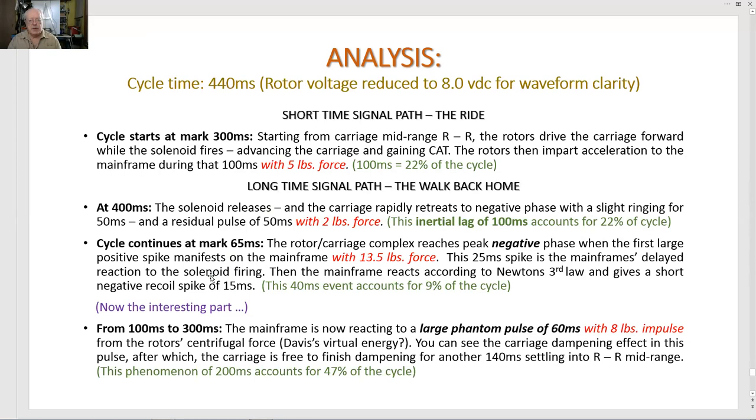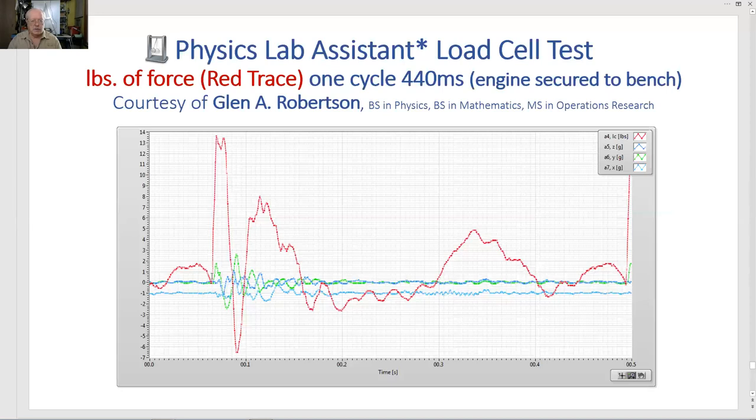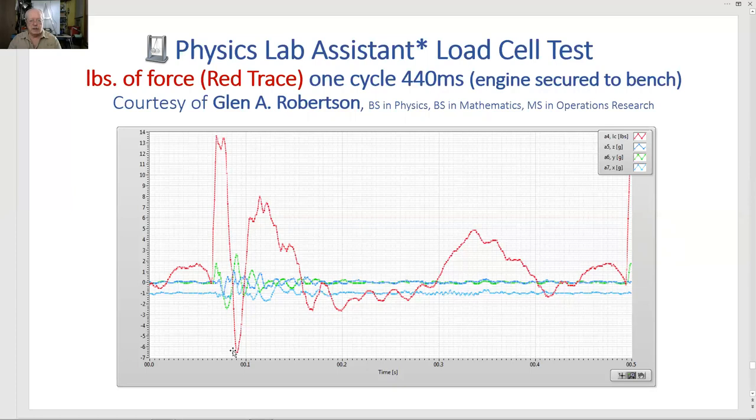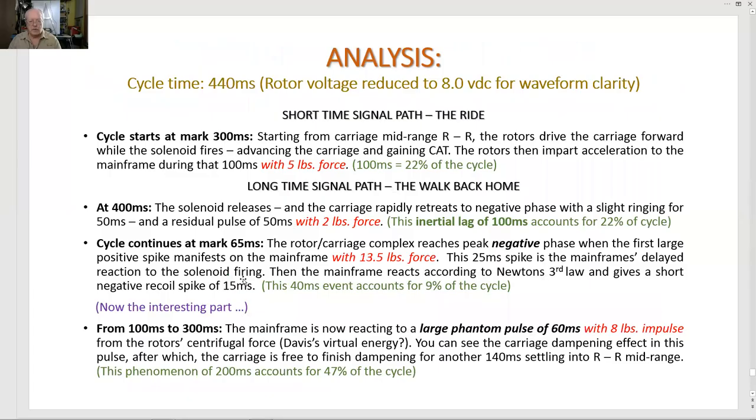The rotor carriage complex reaches peak negative phase when the first large positive spike manifests on the mainframe with 13.5 pounds of force. The carriage is already towards the back of the mainframe when this pulse occurs. This 25 millisecond spike is the mainframe's delayed reaction to the solenoid firing. Then the mainframe reacts according to Newton's third law and gives a short negative recoil spike of 15 milliseconds. Recoil spike. This 40 millisecond event accounts for 9% of the cycle.